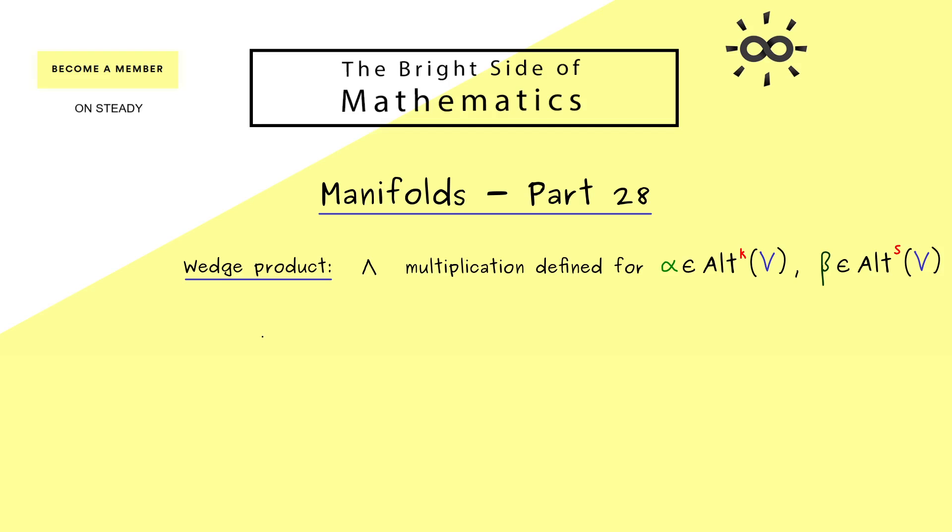This means we can see it as a map from the Cartesian product, so we have Alt^k times Alt^s, and then it should map into the alternating k-forms again. However, now the outcome should be a (k+s)-form. So this is what we want to have, and for the reason behind it, you can already think of integration.